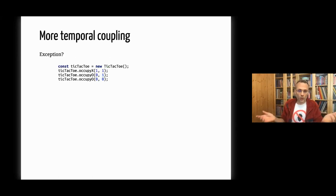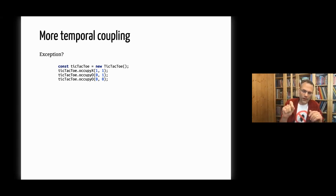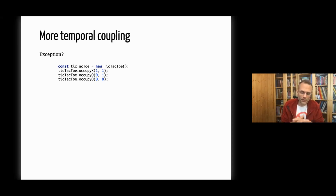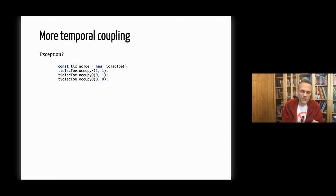There are several variations of temporal coupling. Here's another: a tic-tac-toe game. You have a 3×3 board and players alternately place their X or O. The problem: the old player can play twice. There is no way that this tic-tac-toe can enforce the rule that turns must alternate between players.